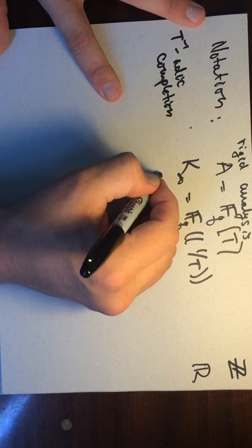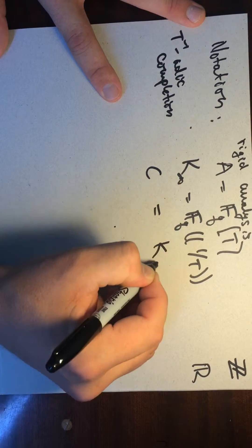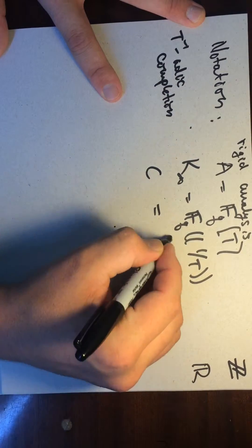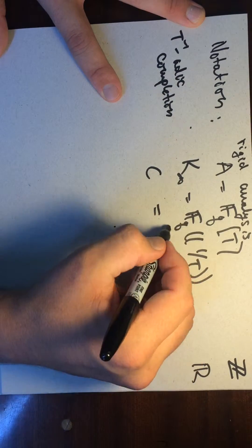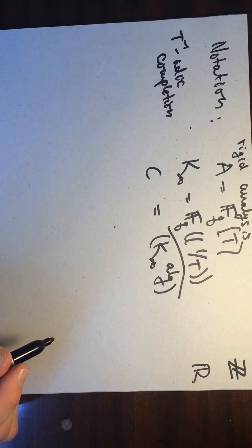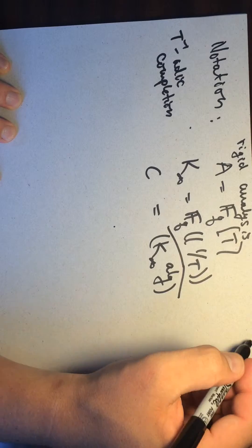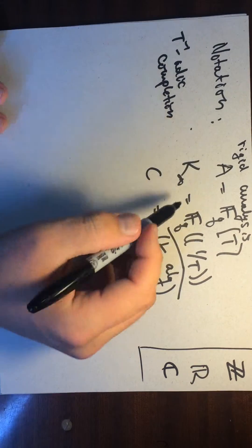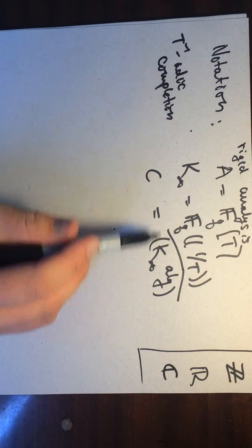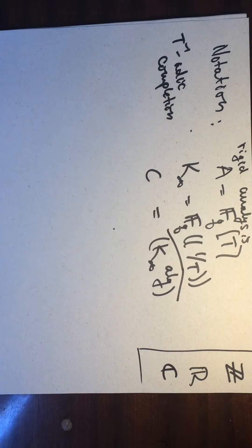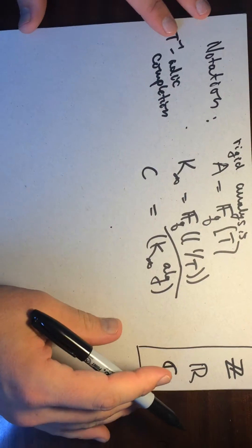And then another thing that we can do is we can take this thing and then we can algebraically close it. And then we can T-adically complete again. So, and this will play the role of C. Okay. So we're going to do rigid analysis here. And so this is something that's algebraically closed and topologically closed. Okay. So now I've said all this,